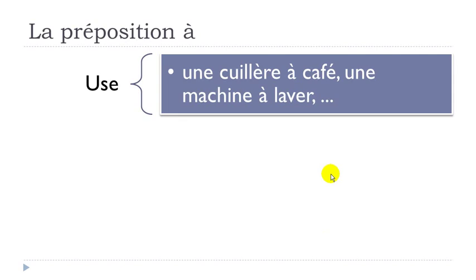You can also use À to differentiate the purpose or type of an object. For instance: 'une cuillère à café' — a coffee spoon — or 'une machine à laver' — a washing machine.